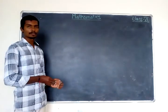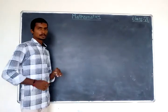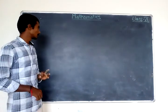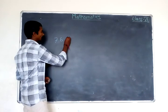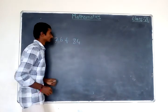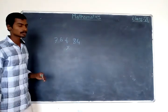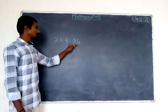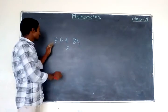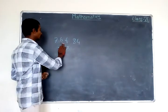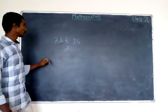Now we will look at estimation of product. Suppose I take two two-digit numbers — that is seventy-six and eighty-four — and I want to find the product. I will approximate these numbers to the nearest tens. Seventy-six: the units digit is six, which is more than five, so this number should be approximated to eighty.